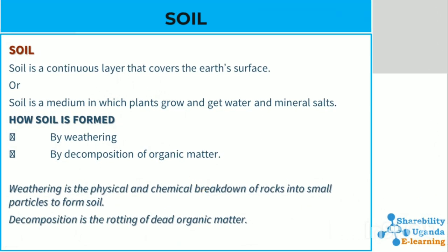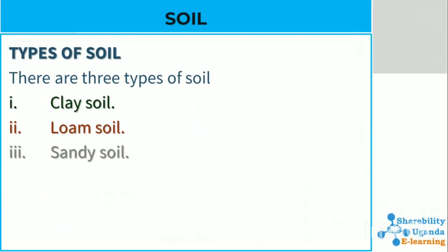Soil is a continuous layer that covers the earth's surface, or a medium in which plants grow and get water and mineral salts. There are two conditions under which soil is formed: first, by weathering and by decomposition of organic matter. Weathering is the physical and chemical breakdown of rocks into small particles to form soil, and decomposition is the rotting of dead organic matter.